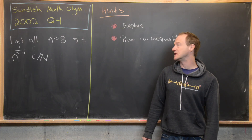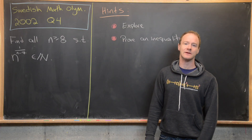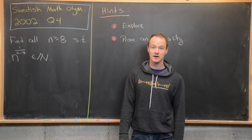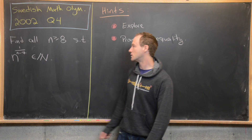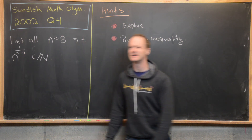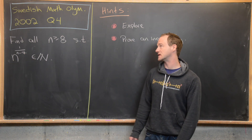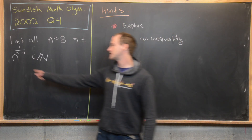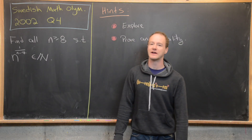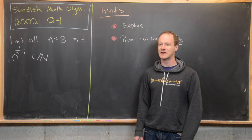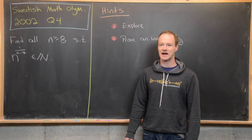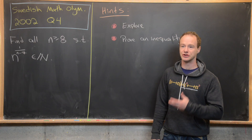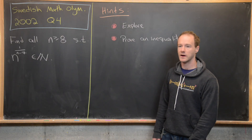Let's look at why we need n bigger than or equal to 8. If n equals 7, we'd have n to the 1 over 0, which doesn't make sense. If n equals 6, we get n to the 1 over negative 1, which is n to the negative 1 — clearly not a natural number. Similar issues arise for n equal to 5, 4, 3, 2, or 1.